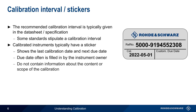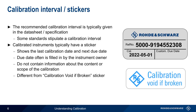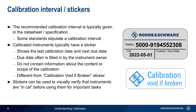However, these calibration stickers do not contain any information about the content or the scope of the calibration. Also note that these are different from the 'calibration void if broken' type stickers, which are used to discourage unqualified persons from opening up an instrument. Both of these types of stickers are important in that they provide a quick visual check as to whether the instrument is still in cal before using it for important tasks.